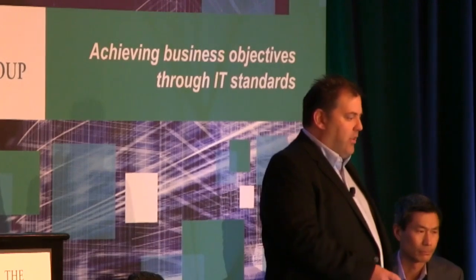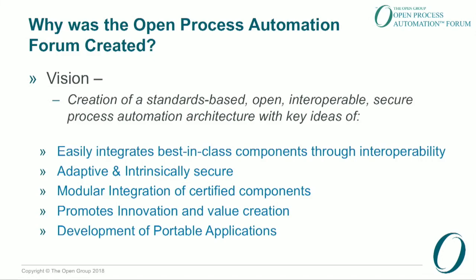We'll talk today about why we're here, why the forum was created, some of the use cases, the ecosystem around that, some of the quality attributes, and the call to action. So the vision of this group is the creation of an open standard for process automation architecture. A couple of key ideas were important to include as we move forward: easily integrates best-in-class components through interoperability, and the ability to accelerate innovation.